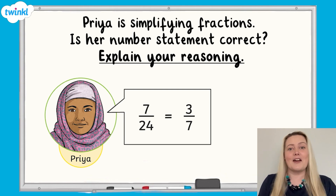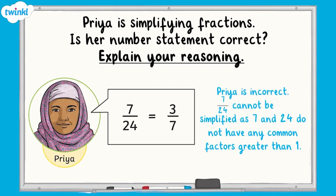Have you got an answer? Fantastic. Because 7 and 24 do not have any common factors greater than 1, the fraction is already in its simplest form. So Priya is not correct. I hope this video has helped you to understand simplifying fractions. If you need some more maths support, we've got lots more videos like this one available on the Twinkle website.